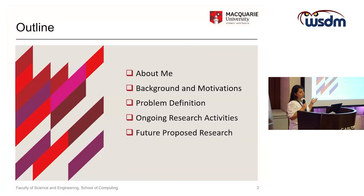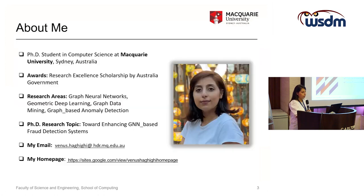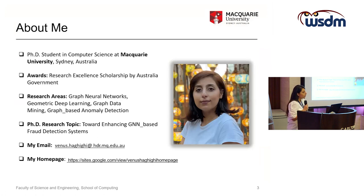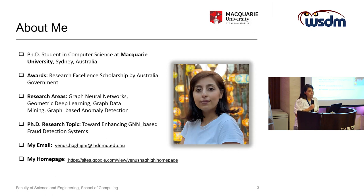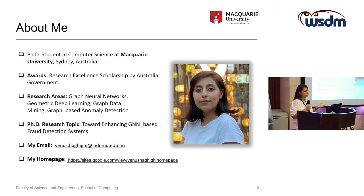This is the outline of my presentation. First of all, I would like to introduce myself and then go into the detail of my work. I'm a second year PhD student in computer science at Macquarie University, Sydney, Australia, and I've been awarded research excellence scholarships by the Australian government. My research areas include graph neural networks, geometric deep learning, graph data mining, and graph-based anomaly detection. Specifically, my PhD research focuses on enhancing GNN-based fraud detection systems.